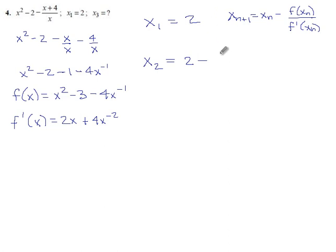And that gives us 2 minus—if we put 2 into our original function we get 4 minus 3 is 1 minus 4 over x is negative 1—over, and then we put 2 into our derivative and we get 4 plus 4 over 4 is 5. This comes out to 2 plus 1 fifth, which is 2.2.